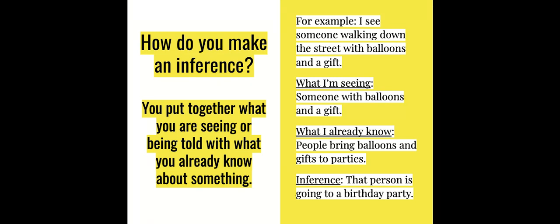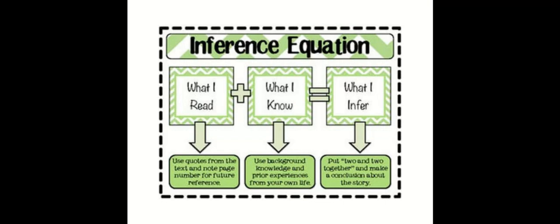You make inferences all of the time without really even realizing it — when you see things, when you read things, when you hear things, you usually make inferences. This is an inference equation: what I read — you use quotes from the text and note the page number — plus what I know, using your background knowledge and prior experiences, equals what you infer. You put two and two together and make a conclusion about the story, article, or whatever you're reading.